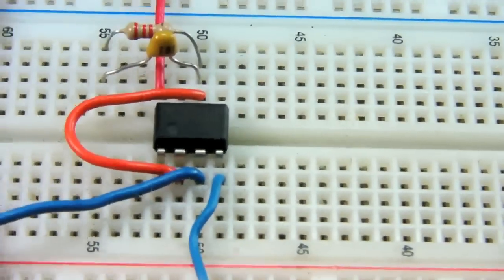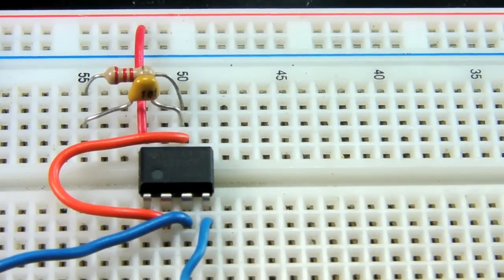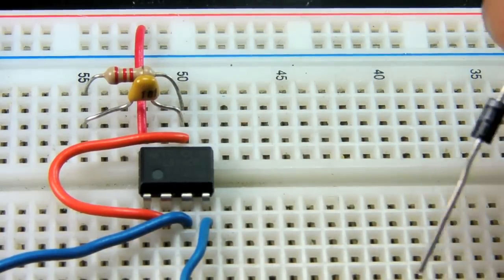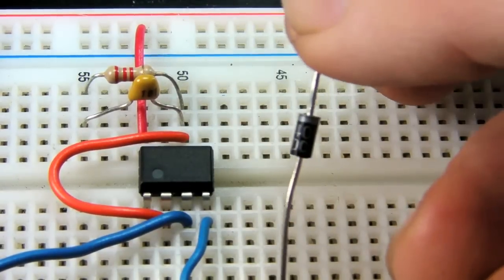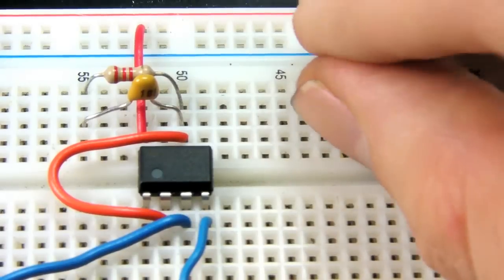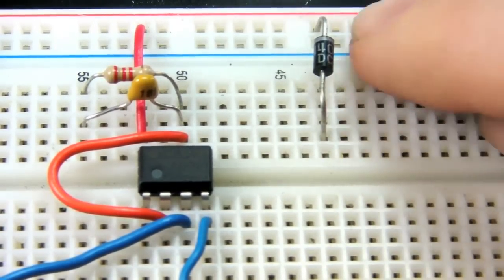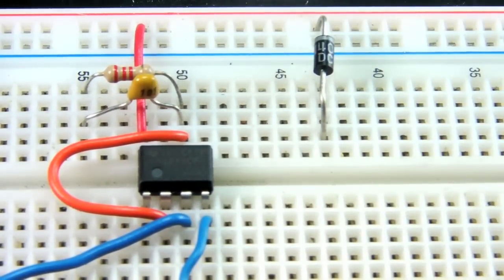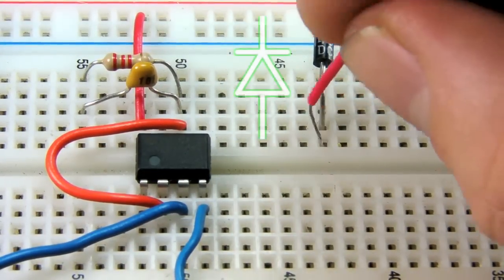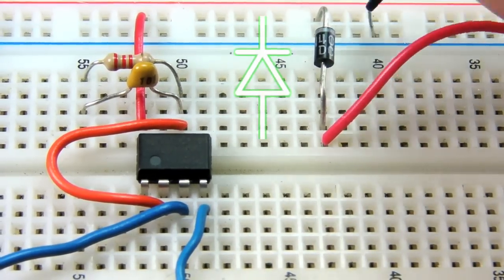Diodes come in quite handy for power protection in test circuits. Some chips can be easily damaged if their positive and negative power connections are reversed. To guard against accidentally powering them incorrectly, use a 1N4001 rectifier diode in between your voltage source and the chip's positive terminal. This ensures electrons will only move in the correct direction through the circuit.